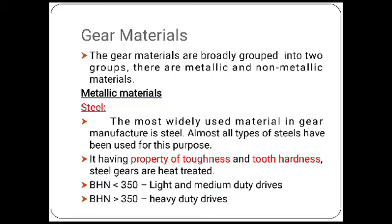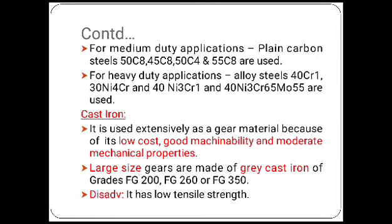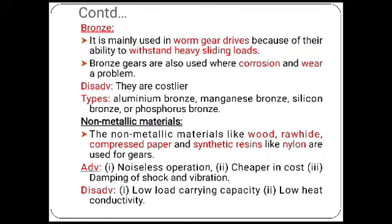Regarding gear materials, there are many options. For metallic materials: steel is the most widely used material for manufacturing different types of gears. Cast iron also offers good machinability and moderate mechanical properties — it is the second most used material. Bronze is mainly used in worm gear drives.